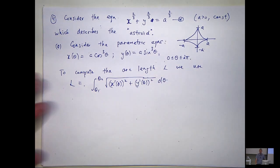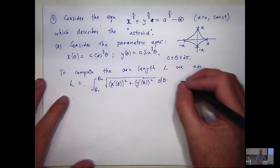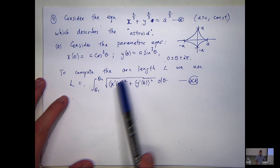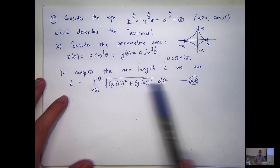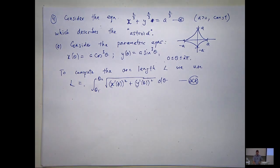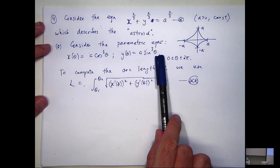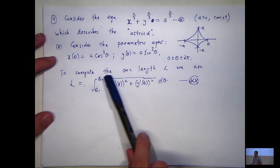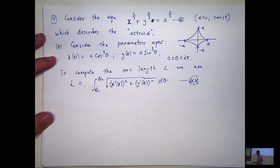So we're going to use this set up here. Let's call that double star. All we need to do is go here, calculate our derivatives, square them, add them together, and then see if we can simplify. Now, obviously, when we differentiate these things and square them, we're going to get some pretty involved functions. But hopefully we can manage this square root sign away. So let's do that.